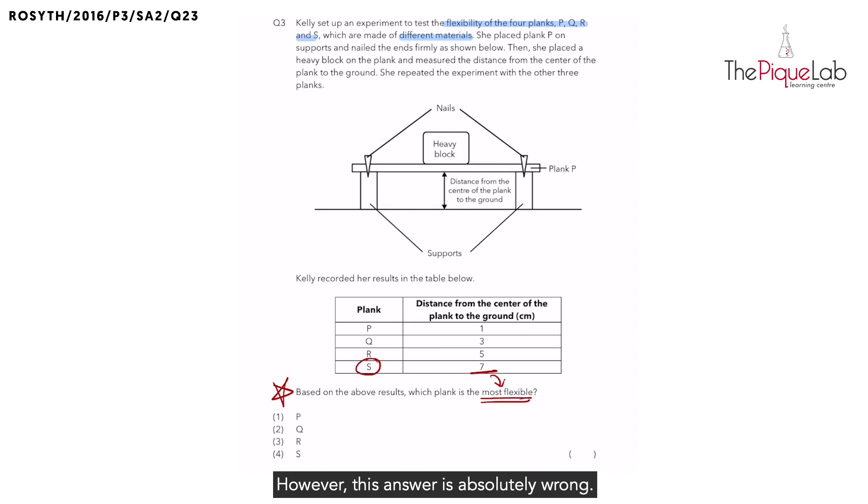However, this answer is absolutely wrong. Why? Because the results here are the distance from the centre of the plank to the ground, which means the plank that bent the least.